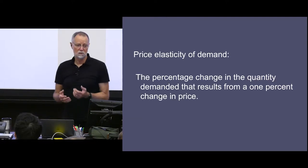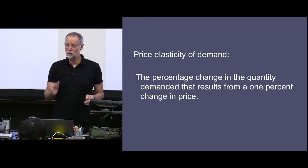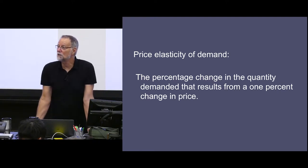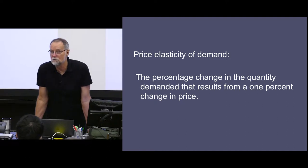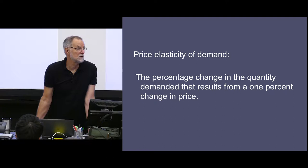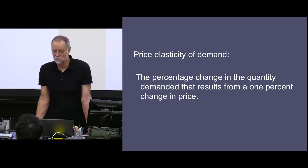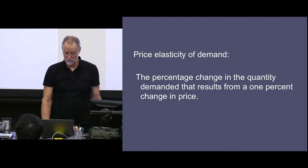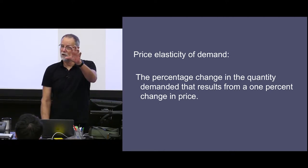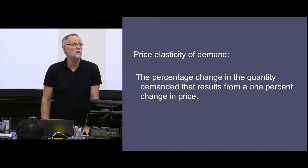It's a local concept. We're at a point on the demand curve, P and Q. We're going to change the price, but not by much — 1% would count as a minor change. What's the corresponding percentage change in the quantity demanded? If we take that quantity percentage change and divide it by 1% — the price change that gave rise to it — that ratio is the elasticity of demand at that point.